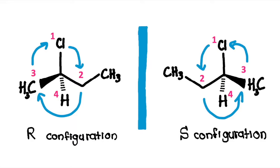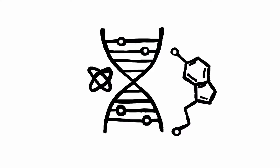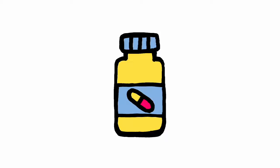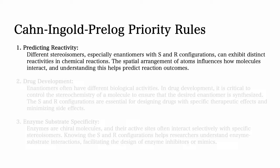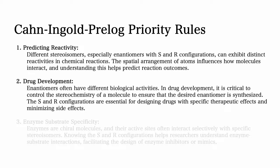The S and R configuration system in stereochemistry is crucial because it provides a standardized and systematic way to describe 3D arrangements of atoms around chiral centers. Understanding stereochemistry has important implications in various fields including chemistry, biochemistry, and pharmaceutical sciences. For instance, it helps us predict reactivity — different isomers, especially enantiomers with S and R configurations, can exhibit distinct reactivities in chemical reactions. The spatial arrangement of atoms influences how molecules interact.